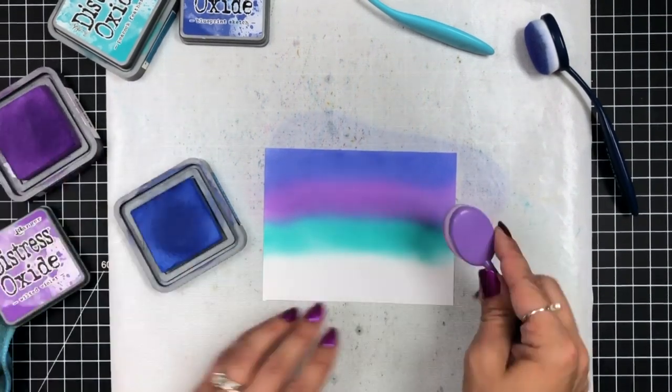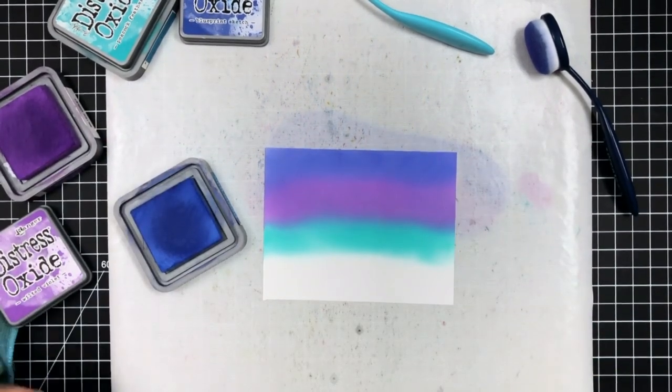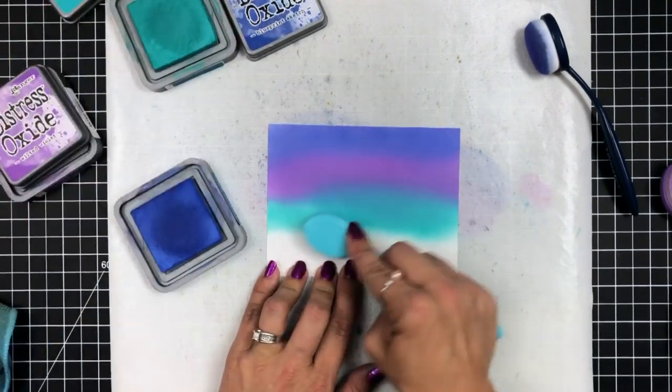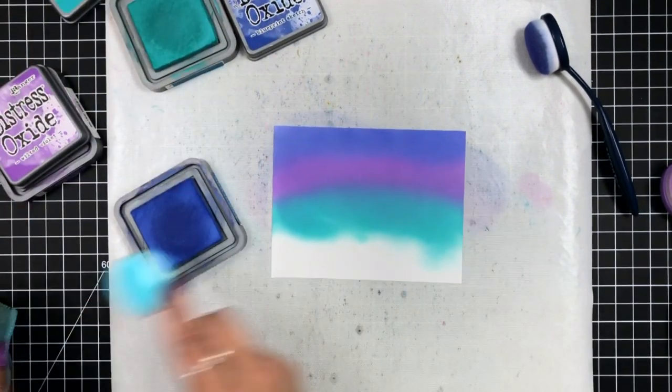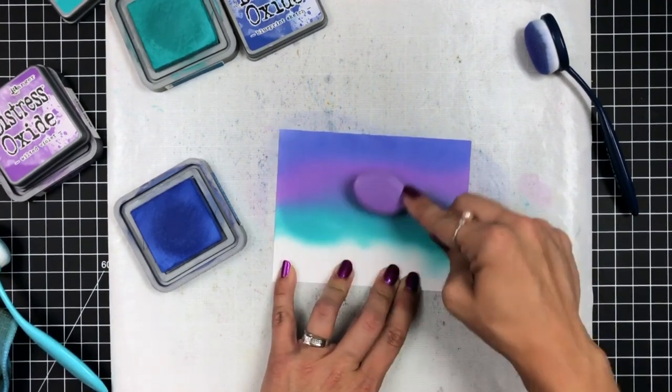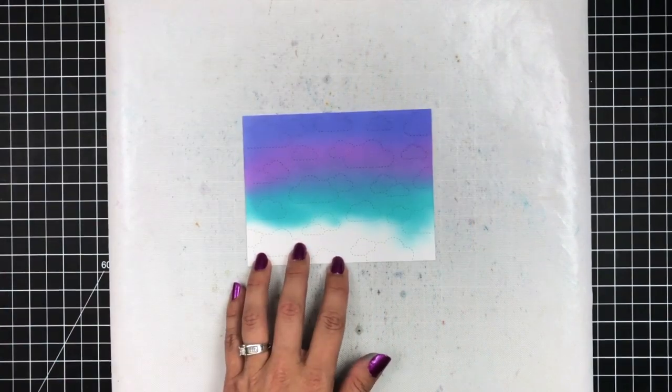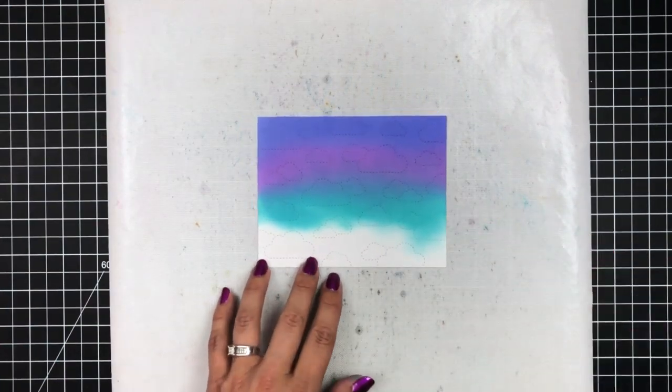Once I was finished blending, I actually had run this through my die cut machine with a stitched cloud backdrop die. I would totally skip that step if you were recreating the scene because after I added my splatters with water, you couldn't even hardly see the clouds.